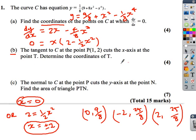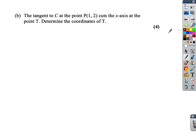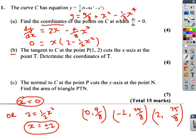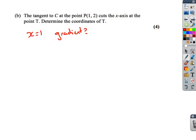Part B: the tangent to C at the point P(1, 2) cuts the x-axis at the point T — determine the coordinates of T. First, let's find the gradient at x equals 1. We've just worked out dy by dx, so we put x equals 1 into that equation. We find that when x is 1, the gradient is 3 over 2.